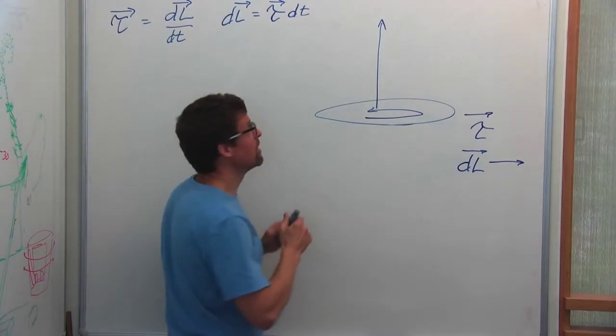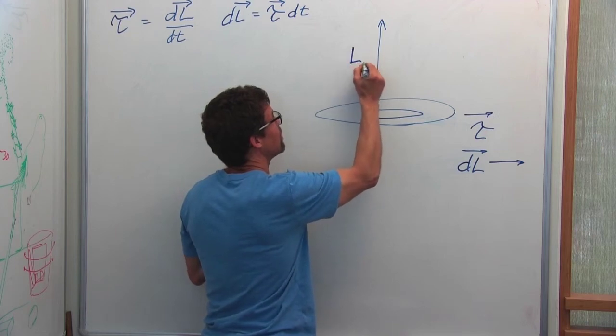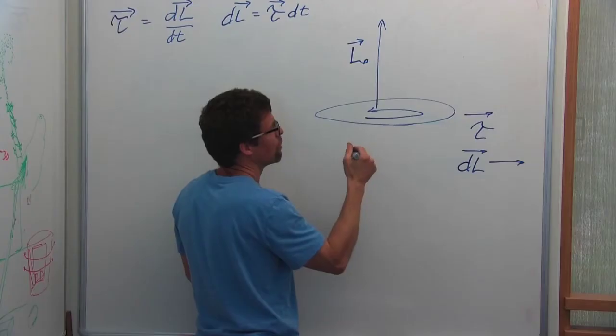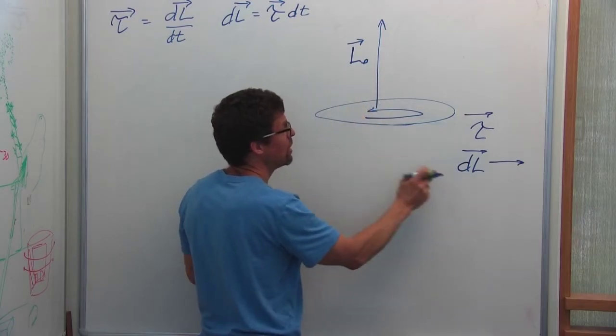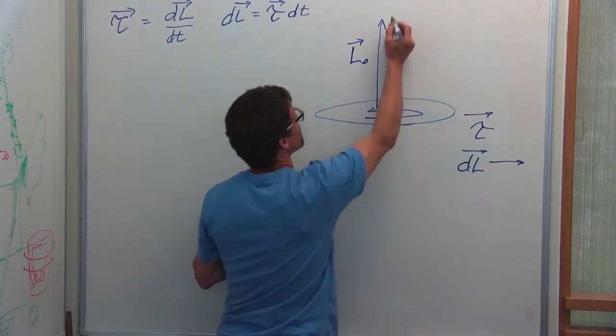But if already the frisbee is spinning very fast, it has some initial angular momentum, L₀. So the final angular momentum will be the angular momentum it already has, plus the angular impulse I give it.